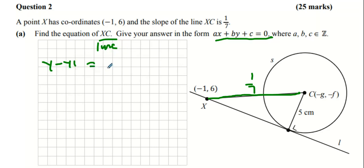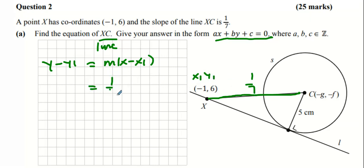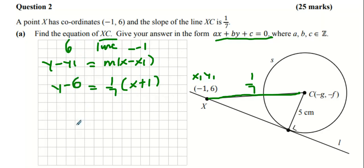The equation of a line is y minus y₁ equals m times (x minus x₁). We know a point on the line — point X — so that's our x₁, y₁. The slope is one seventh, so it's going to be one seventh times (x minus x₁). Since x₁ is minus one, that becomes plus one, and y₁ is six, so it's y minus six.